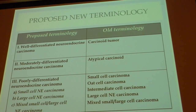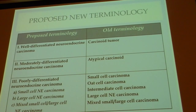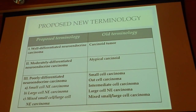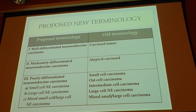A comparison of the proposed new terminology versus traditional WHO terms shows that well-differentiated maps to carcinoid tumors, moderately differentiated or grade 2 equates to atypical carcinoid, and poorly differentiated corresponds to large cell neuroendocrine carcinoma and small cell carcinoma—entities still listed in the WHO classification as variants of small cell or large cell carcinoma.